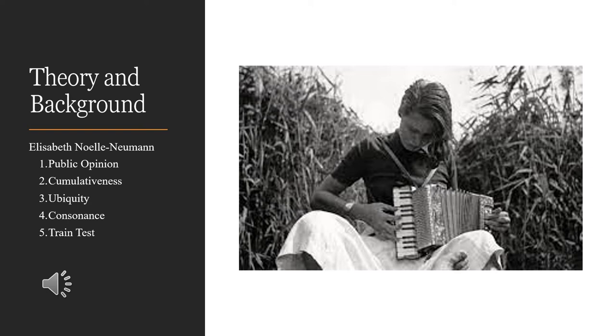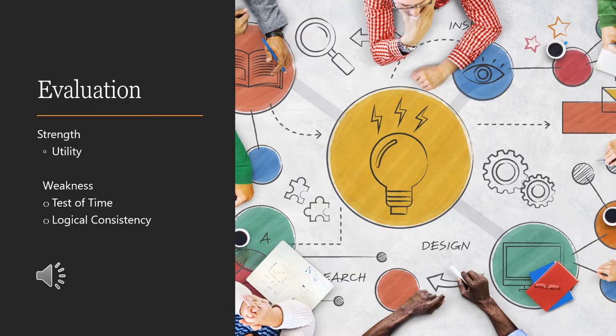One of the key experiments that she did was called the train test. She didn't actually put people on a train. She just asked them if they would voice their opinion if they were next to somebody on a train for four or five hours. They did this on a bunch of different topics and were curious what factors would allow somebody to speak up about their opinion. That was the main basis for her theory.